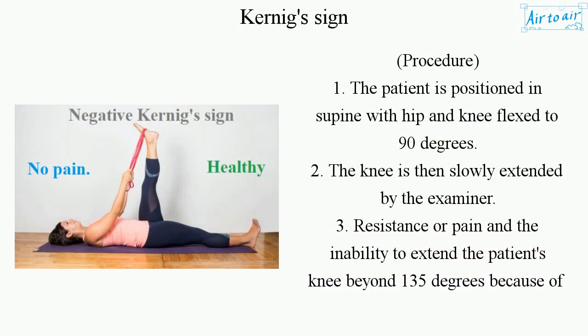Procedure: 1. The patient is positioned in supine with hip and knee flexed to 90 degrees. 2. The knee is then slowly extended by the examiner. 3. Resistance or pain and the inability to extend the patient's knee beyond 135 degrees because of pain.